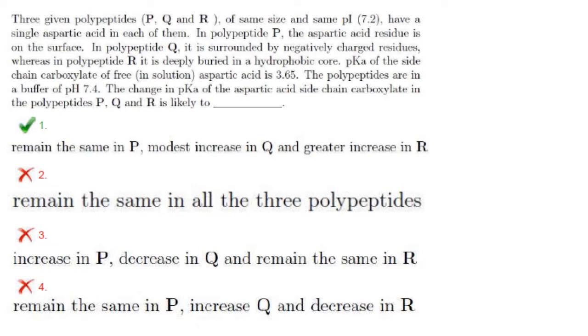The pKa of the side chain carboxylate of free aspartic acid is 3.65. The polypeptides are in a buffer of pH 7.4. The change in pKa of aspartic acid side chain carboxylate in the polypeptides P, Q, and R is likely to...